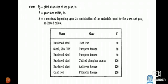Where D_G = pitch diameter of the gear, B = gear face width, and β = constant depending upon the combination of materials used for the worm gear. First combination: hardened steel worm with cast iron gear has β constant value 50.